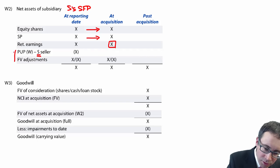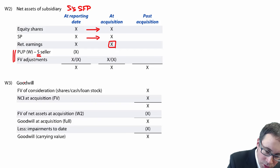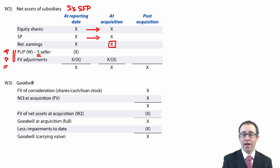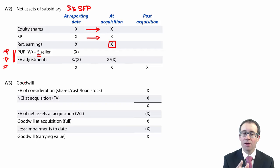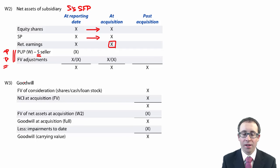Be careful: whatever adjustment you have in working two — whether it's a PUP or a fair value adjustment — don't forget to also make the other side of the entry in the group statement of financial position. With your PUP you would need to adjust your inventory; if the fair value relates to PPE, you adjust PPE as well. You score the marks when you put the numbers into the group accounts, not much for the working itself in working two.